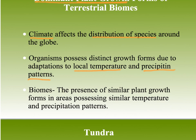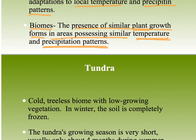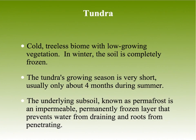We define biomes as the presence of similar plant growth forms in areas possessing similar temperature and precipitation patterns. Anytime we talk about a biome we're going to talk about plants, temperature, and precipitation — not that animals and other organisms aren't important, but temperature and precipitation are the base and driving force.